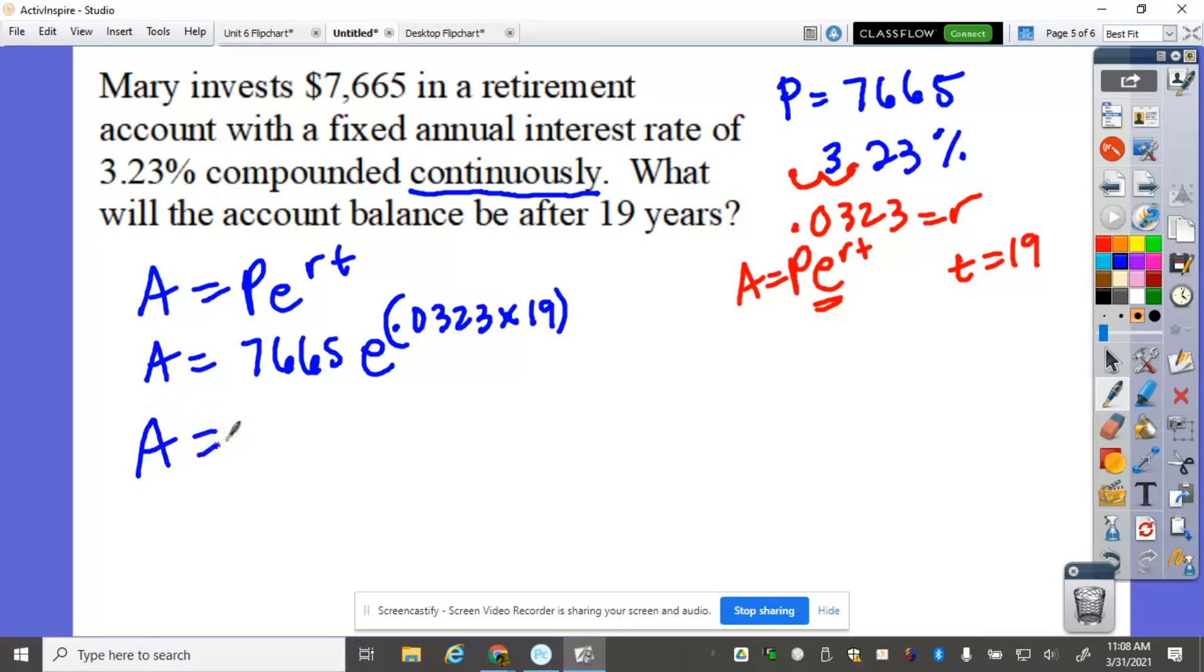That will give me $14,159.20 in 19 years.